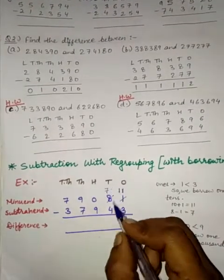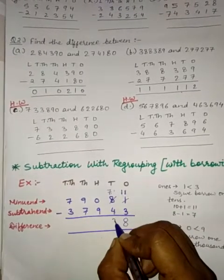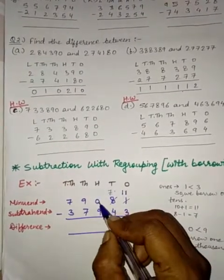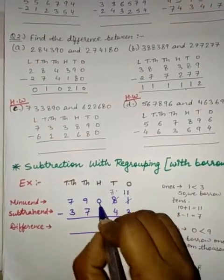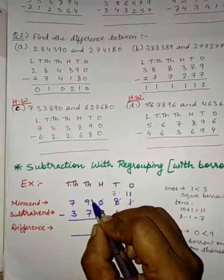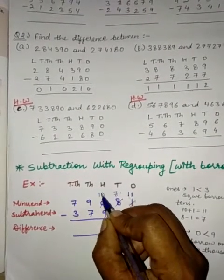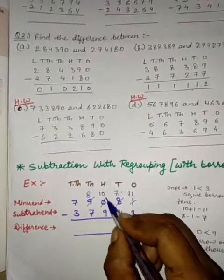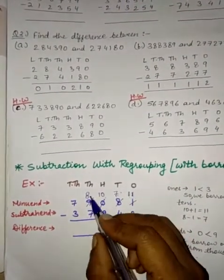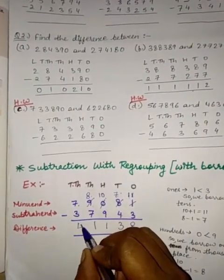Now, 7 minus 4. 7 is greater than 4, so 7 minus 4 is 3. Now again in 100's place, 0 and here it is 9. Because here it is 0, we will borrow again 1 from 1000's place. So this 0 will become 10 and this 9 will become 8. So 10 minus 9 will be 1, and 8 minus 7 will be 1, and 7 minus 3 will be 4.